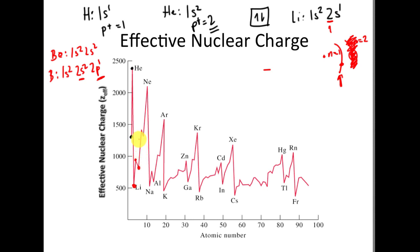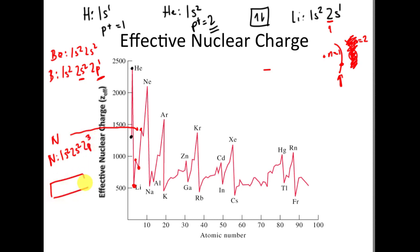Continuing on from boron up to nitrogen — we're filling 2p², 2p³. Nitrogen is 1s², 2s², 2p³. We're staying in the same energy level and same sublevel. No new shielding is being added. Essentially ZEFF is going to go up and up and up as we go from boron to nitrogen.